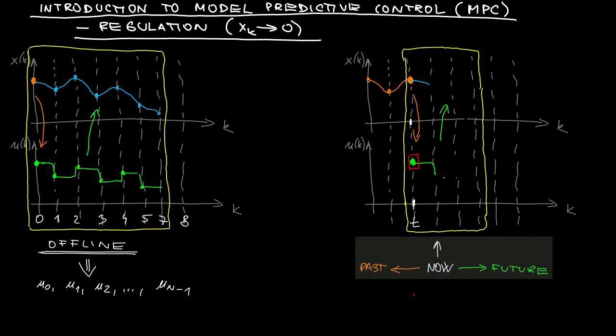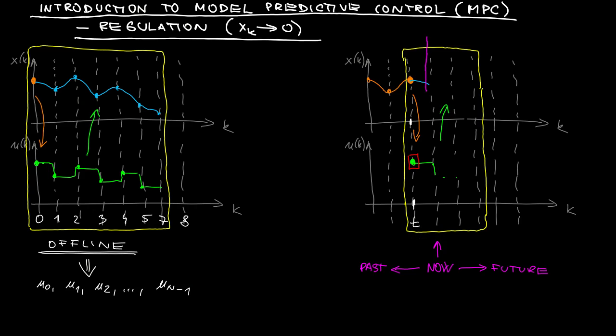And then as time evolves, we move our window to the right, and what we regard as the presence shifts to the right. And we in fact repeat the same procedure.